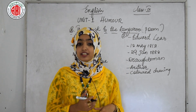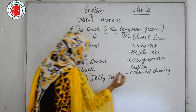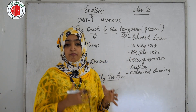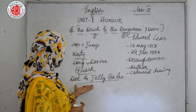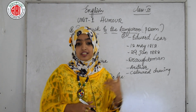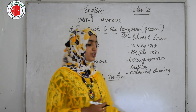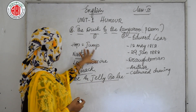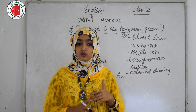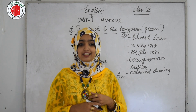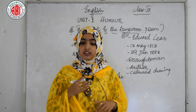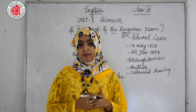'And we would go to the Dee and Jelly Bolly, over the land and over the sea. Please take me a ride — oh do!' said the duck to the kangaroo. The Dee and Jelly Bolly are imaginary places — invented words used by Edward Lear to make the poem beautiful. The duck is requesting to travel over the land and over the sea together with the kangaroo.